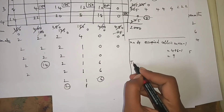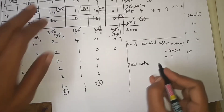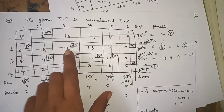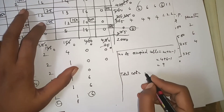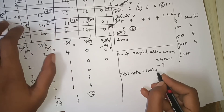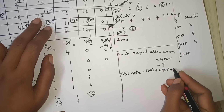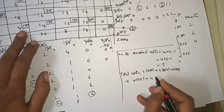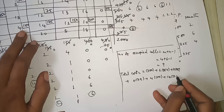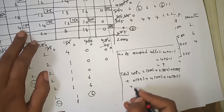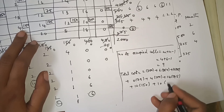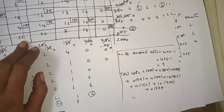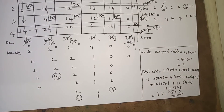Total cost of transportation = 2×300 + 6×350 + 12×75 + 0×75 + 4×100 + 4×100 + 14×175 + 12×150 + 10×400 + 0×375. If you simplify, you will get 12,250.